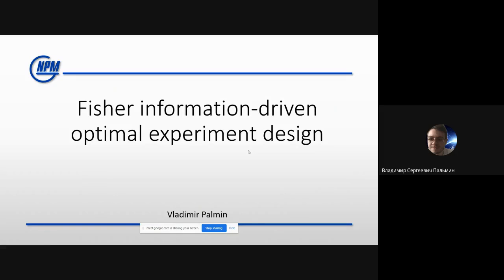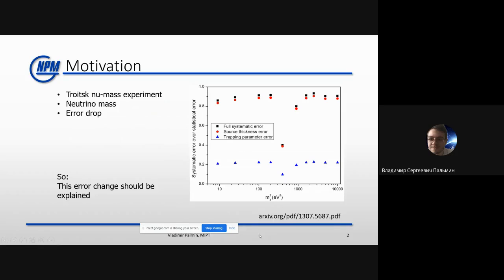Hello everyone. My name is Vladimir and my work is devoted to the problem of how to design an experiment in a proper way using Fisher information. To begin with, I'd like to describe the background of this work: it's the phenomenon discovered in the Troitsk nu-mass experiment, the experiment about discovering the neutrino mass.